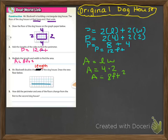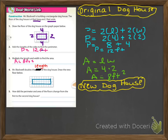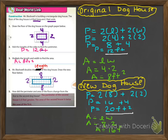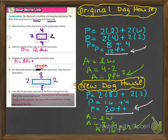Mr. Blackwell doubles the length of the doghouse. Draw the floor below. Keep the width the same at two, but the length changes from four to eight. Draw the new doghouse and write 'new doghouse.' Recalculate the perimeter: P equals two times eight plus two times two, so P equals sixteen plus four. P equals twenty feet — not twenty feet squared, just twenty feet. Make sure you have twelve feet to twenty feet.